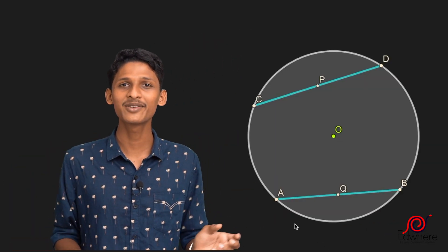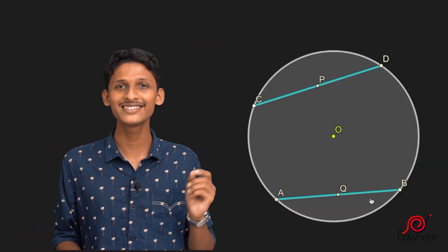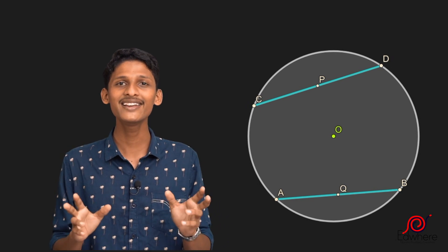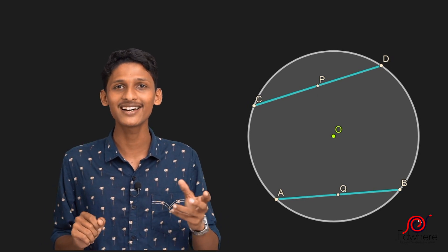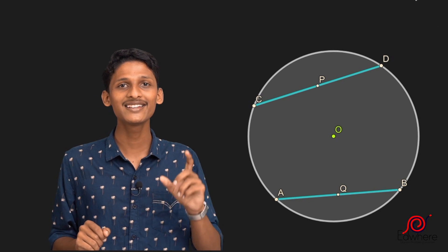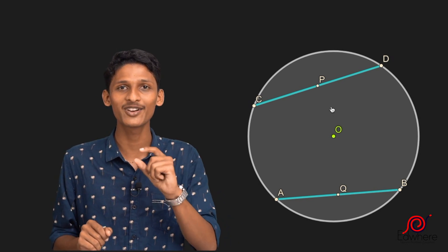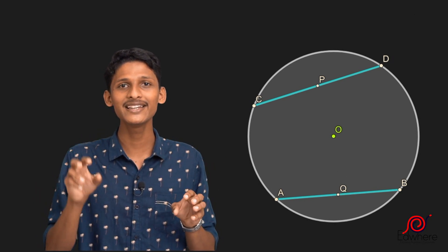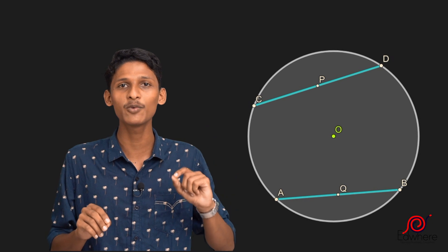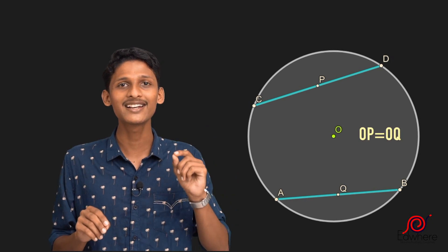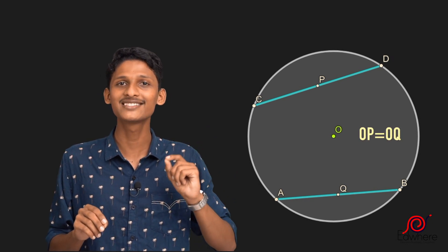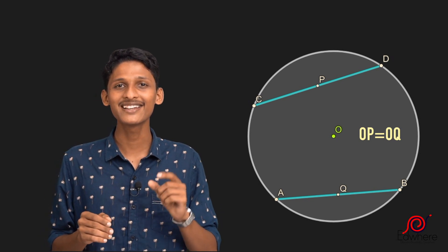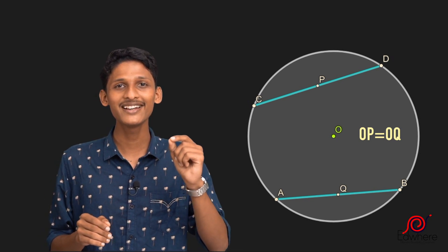We have a circle. In this circle, we have points B, C, and D. There are two chords. The center of this circle is at a perpendicular distance — it is the perpendicular distance from the center of the circle to a chord. It is the distance between two directions.